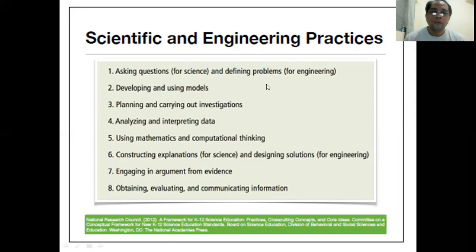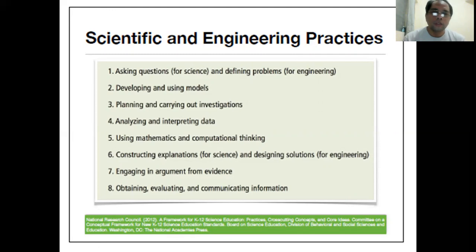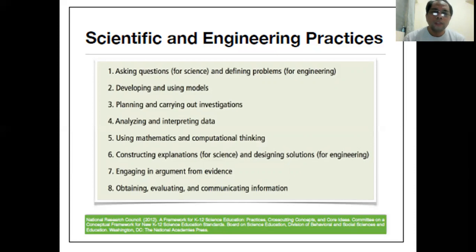If an engineer sees a dilemma, they will always think of a possible solution immediately. Both fields will likely agree on developing and creating a model. Number three is planning and carrying out investigation — you ask what is the cause of the problem, talk to individuals, and find out what is really creating the dilemma. Number four is analyzing and interpreting — once you gather information, you organize it to get to the core of the problem.